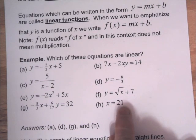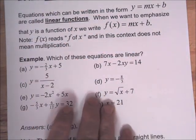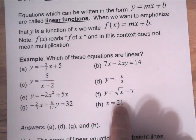X equals 21. Well, that can be written in the form AX plus BY equals C. If A is one and B is zero, we can write this as one X plus zero Y equals 21. So this one's linear.